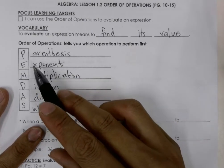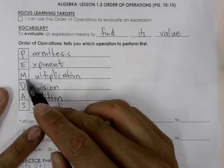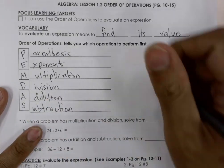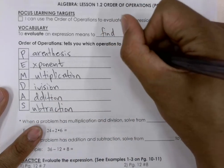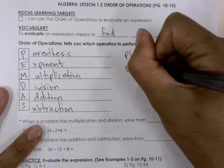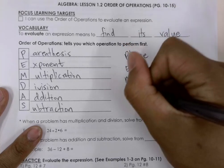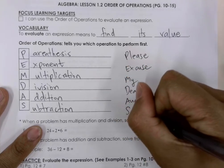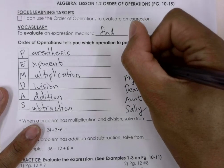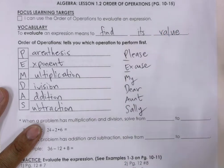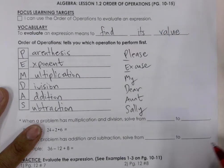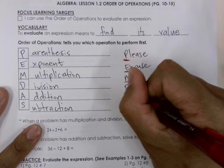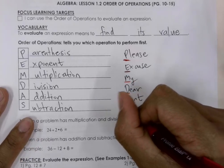An easy way to remember this is PEMDAS. Another easy way to remember this is to use Please Excuse My Dear Aunt Sally. Parenthesis, Exponent, Multiplication, Division, Addition, and Subtraction.